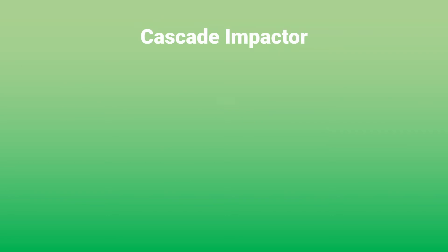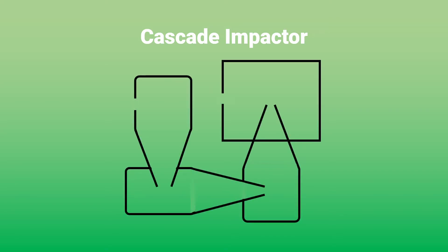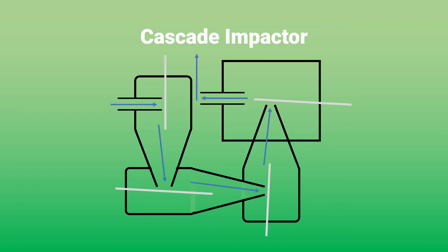The next instrument is the cascade impactor, which is a variation of the high-volume sampler composed of 4 tubes with decreasing diameter on opposite ends. The nozzles are set up perpendicularly, with a microscope slide placed at a small distance from the end of the nozzle. The position of the slides allows them to catch particulates of air. Four nozzles in perpendicular position means that airflow would turn 4 times, ensuring all particulates would be caught.